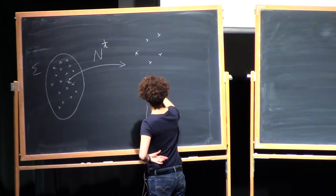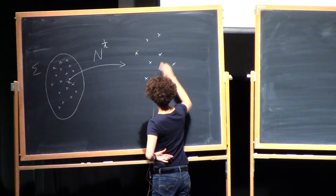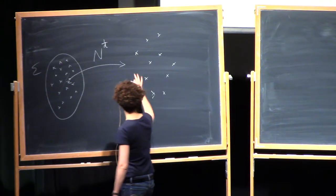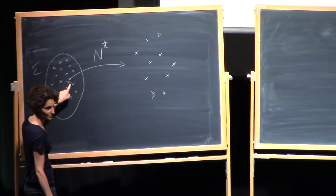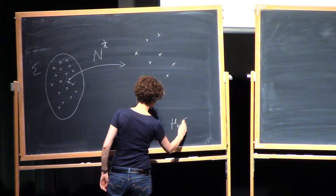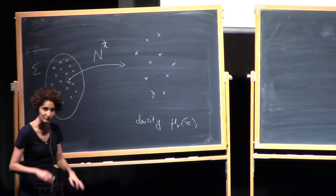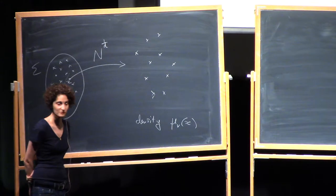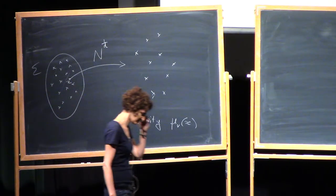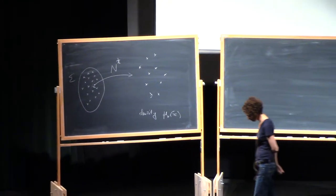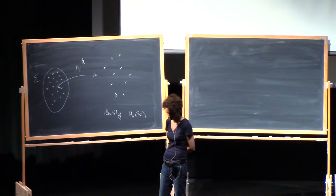After zooming, I will get a configuration of points which are well separated. What is their density? If I zoom near x, the density — meaning the average number of points per unit volume — is mu_v at x, assuming mu_v is a regular measure. As n goes to infinity I'm going to get an infinite configuration of points in the whole space. If we are looking at a situation with temperature, this configuration is random, and that makes what's called a random point process.